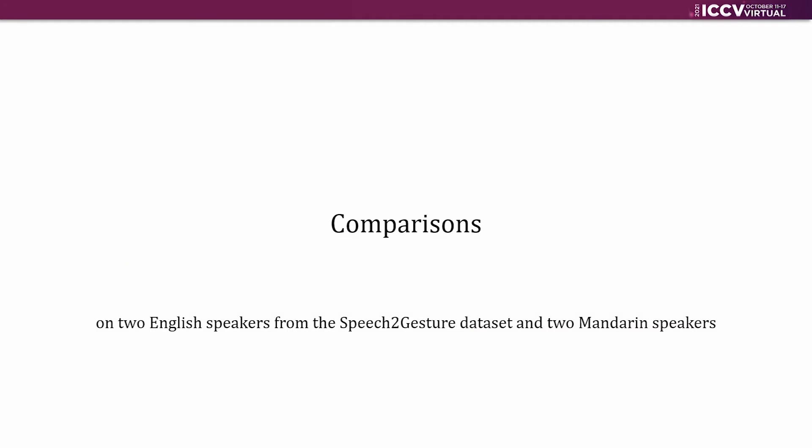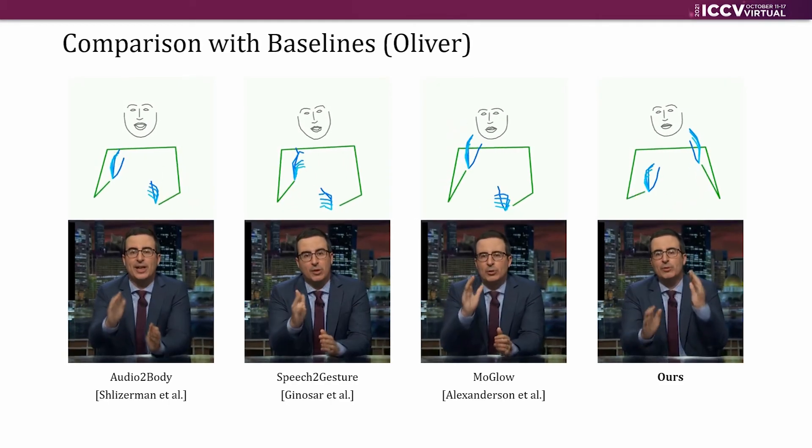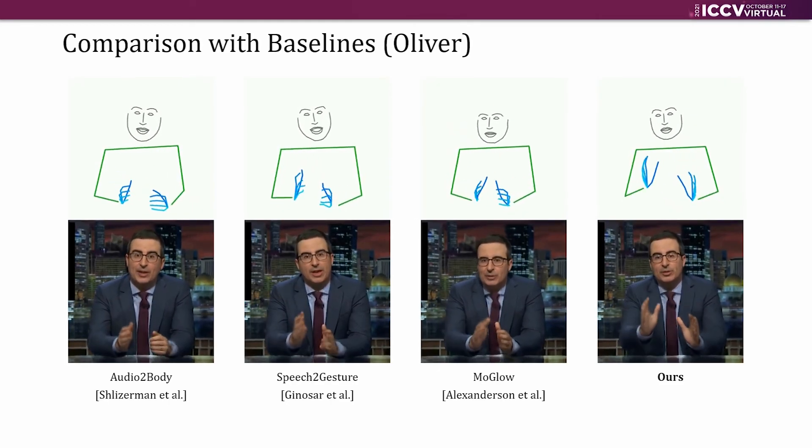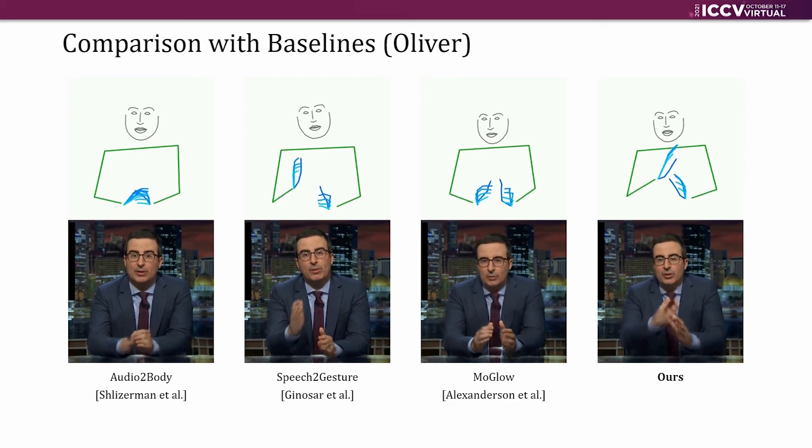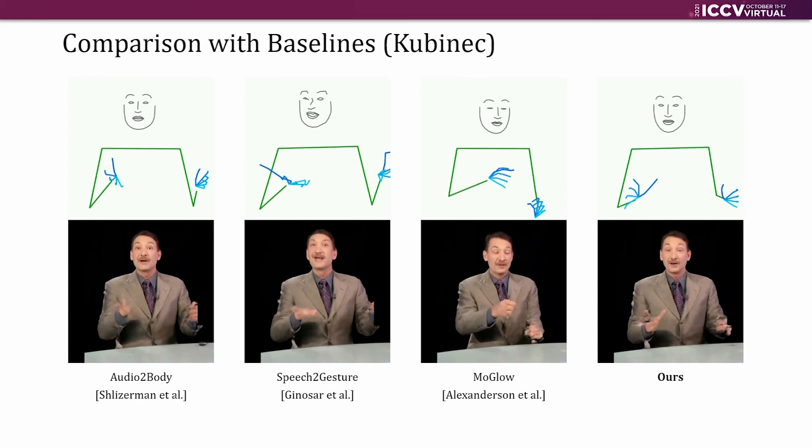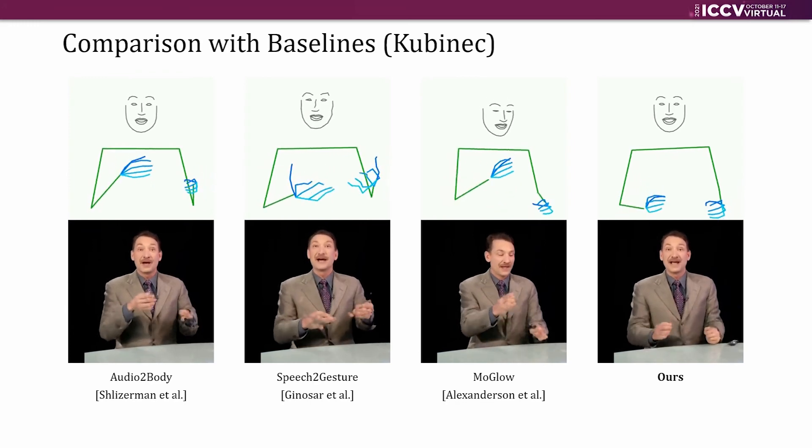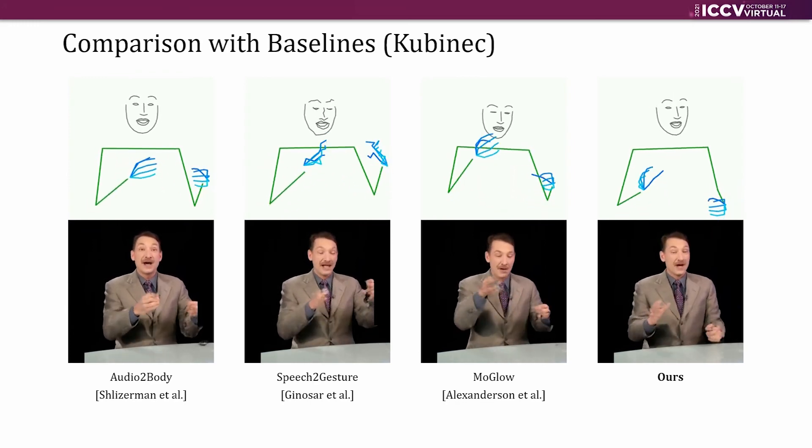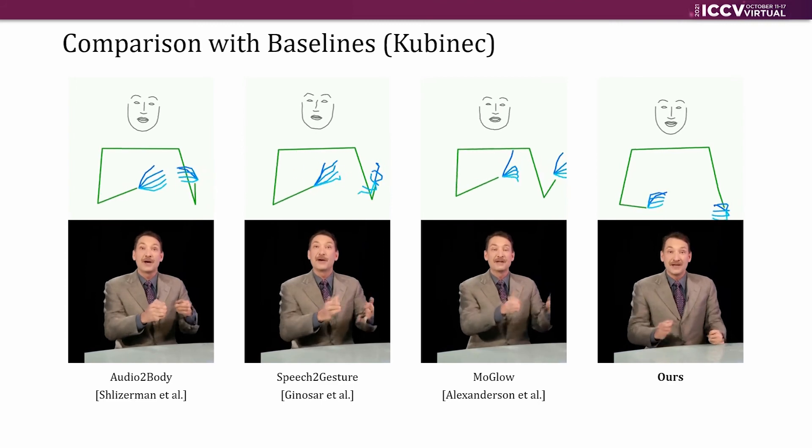We adapt previous methods onto our setting and conduct comparisons. The truth is, with the exception of baby formula, the federal government does not require any food to carry an expiration date. And that works well for diatomics. We can take S and P orbitals and overlap them and form molecular orbitals.